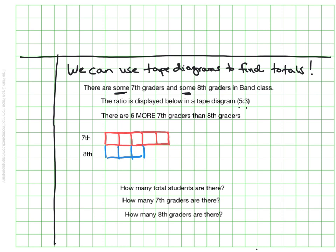I can set up this tape diagram to show my ratio of five to three and now here's what's different. We know there are six more seventh graders than eighth graders. We don't know the total.